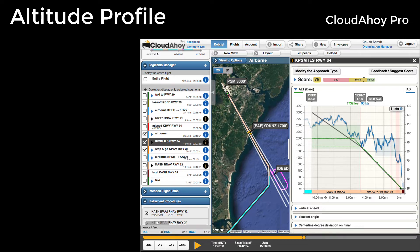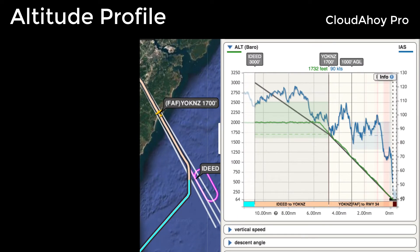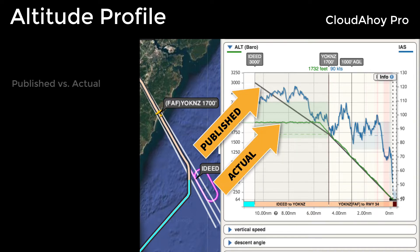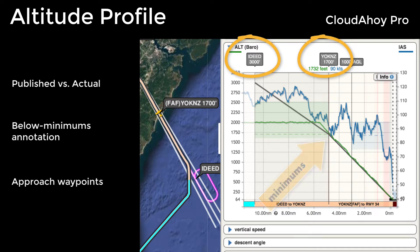If you're an instrument-rated pilot, you'll love the new altitude profile view — much like that of an approach plate. Cloud Ahoy automatically detects which instrument approach you flew, displays the published versus actual altitude profile, annotates where the altitude was below minimums, and annotates the approach waypoints.